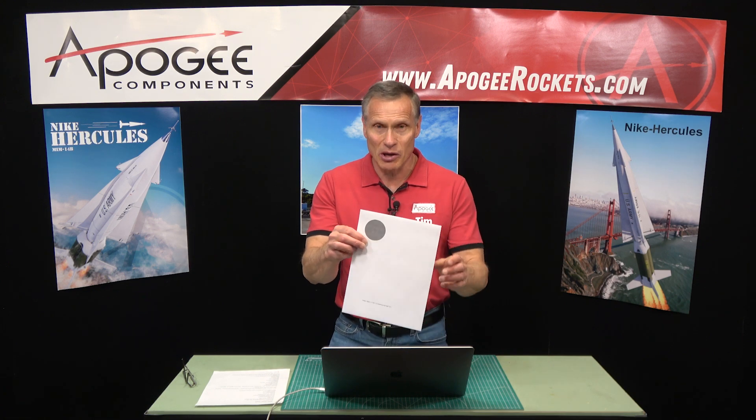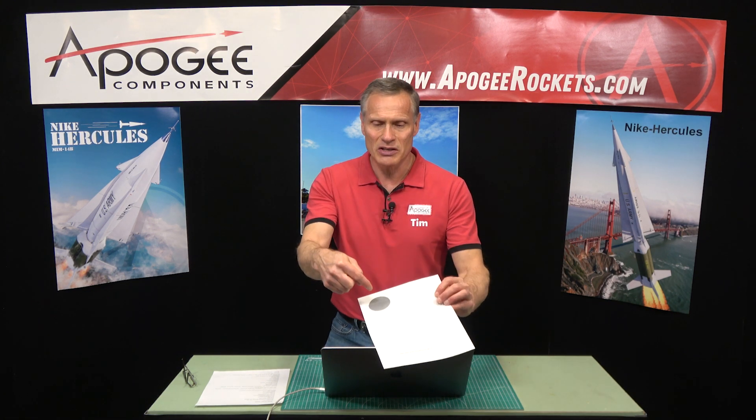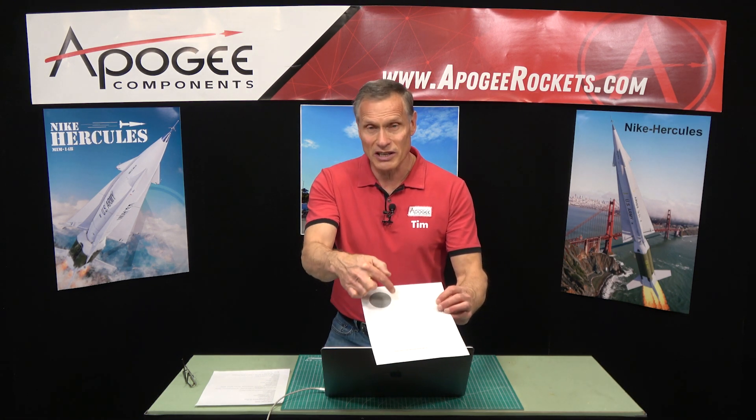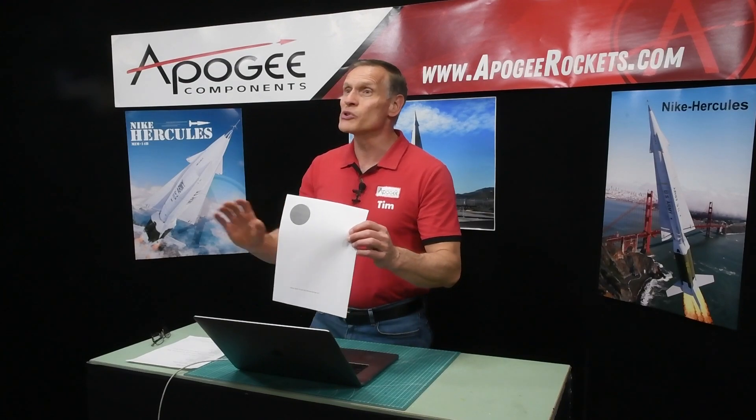We're going to talk more about the software in the future. One other thing that you're probably going to do really quick with it is you're going to use it to print out templates. Like this one right here is a template of a centering ring. RockSim does these really easy. You can do centering rings and fin plan forms. So if you're starting to think about designing your own rockets, you're going to need that kind of thing to create centering rings that are the right size for the tubes that you're putting in your rockets.